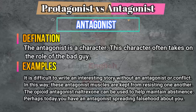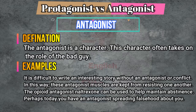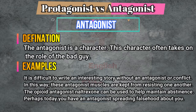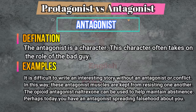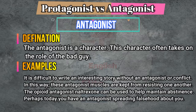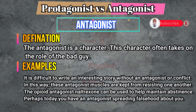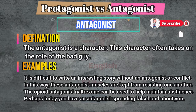It is difficult to write an interesting story without an antagonist or conflict. In this way, these antagonist muscles are kept from resisting one another. The opioid antagonist naloxone can be used to help maintain abstinence. Perhaps today you have an antagonist spreading falsehood about you.